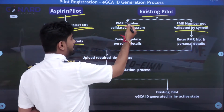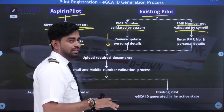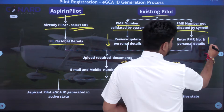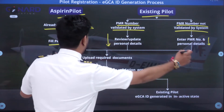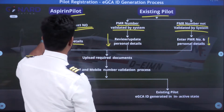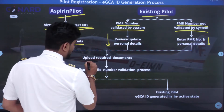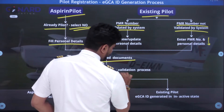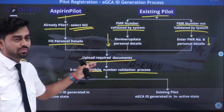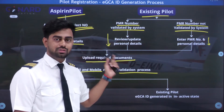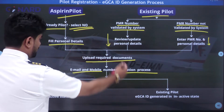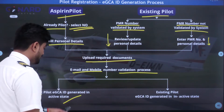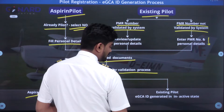If your PMR number is already validated, review all your details and click the Update button. If not validated, enter your PMR number and personal details manually. After this, the steps for both aspirant and existing pilots are the same: upload your required documents, and ensure your email and mobile number have not been registered earlier on the website. Once done, the EGCA ID is generated in an active state for both aspirant and existing pilots.